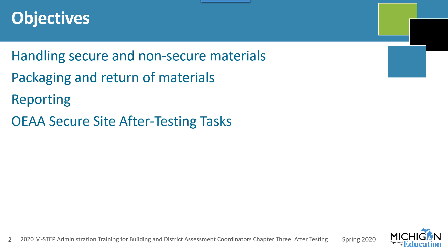And then I'll discuss what needs to be done in the Secure Site after testing. There are some very important things that need to be done that will impact your accountability scores and calculations, so it's important that you complete those tasks. There's also information about each task on the Secure Site Training page at www.Michigan.gov/SecureSiteTraining. Be sure you know everything that needs to be taken care of so that your accountability information is accurate.